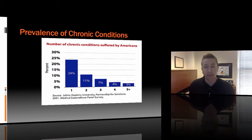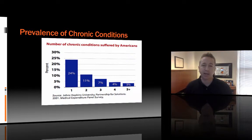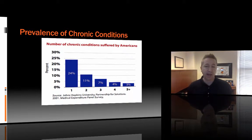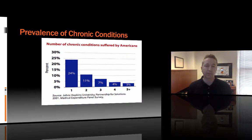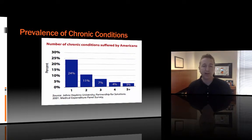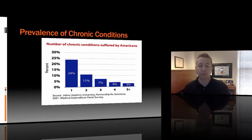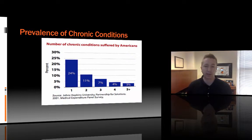Chronic conditions are incredibly common. Looking at the number of chronic conditions suffered by Americans, if you add up each of these bars, you get to nearly half of Americans suffering with one or more chronic conditions. About 25 percent have more than one chronic condition, and there are even three percent of Americans who have five or more chronic illnesses.